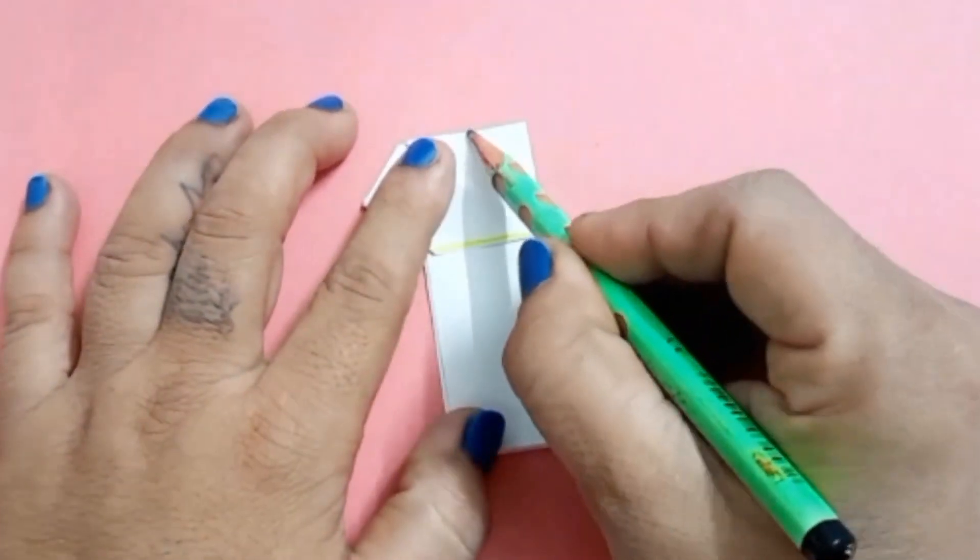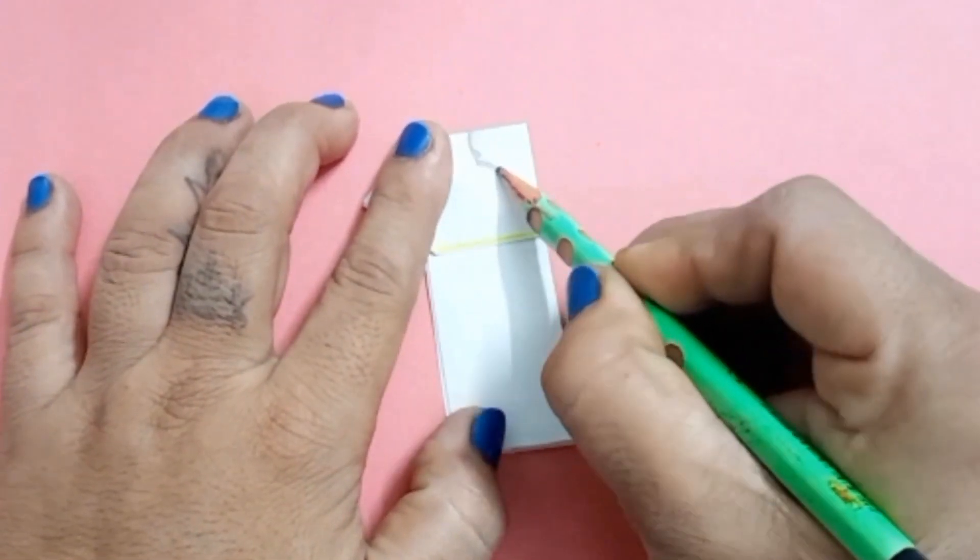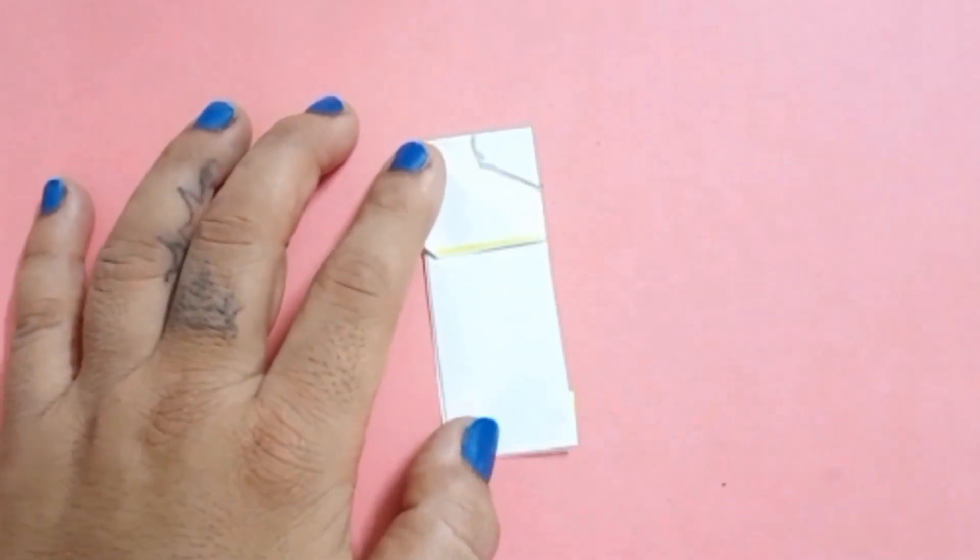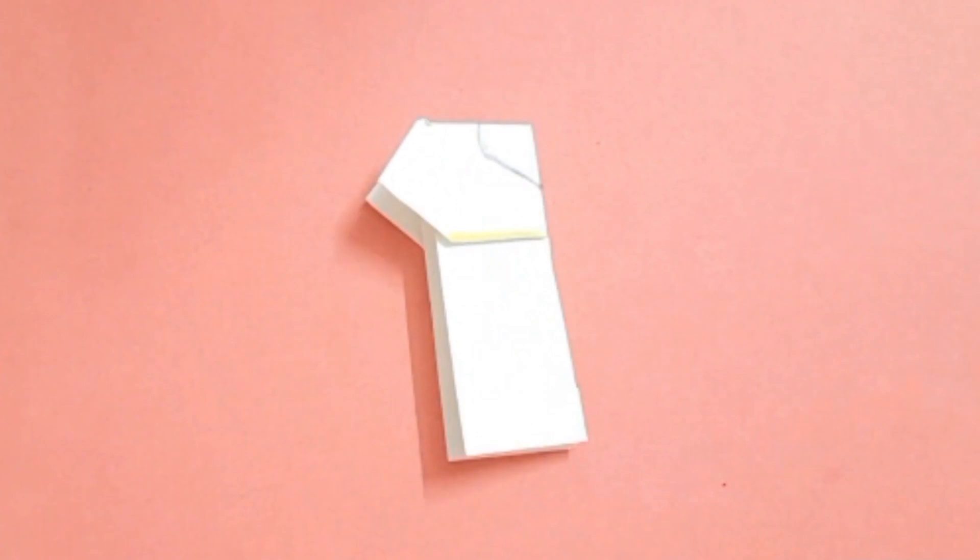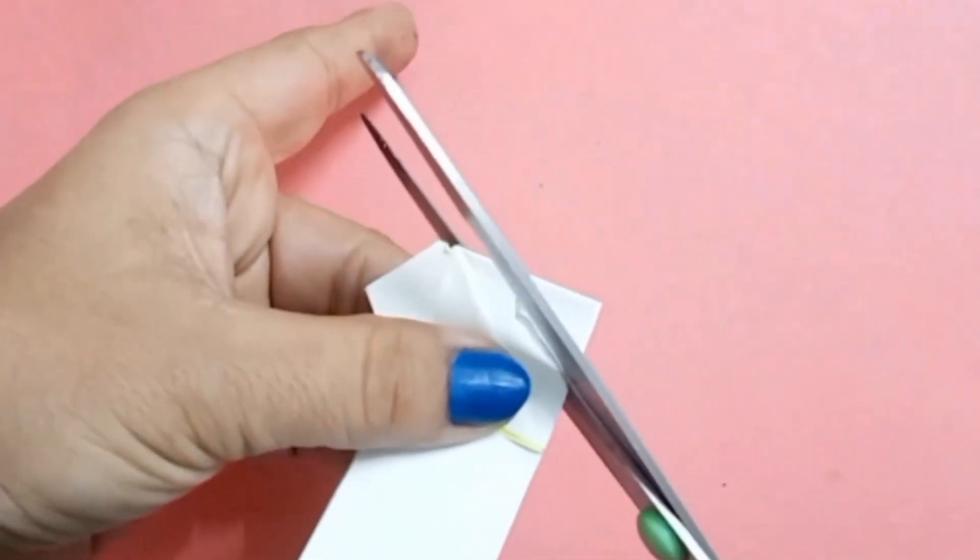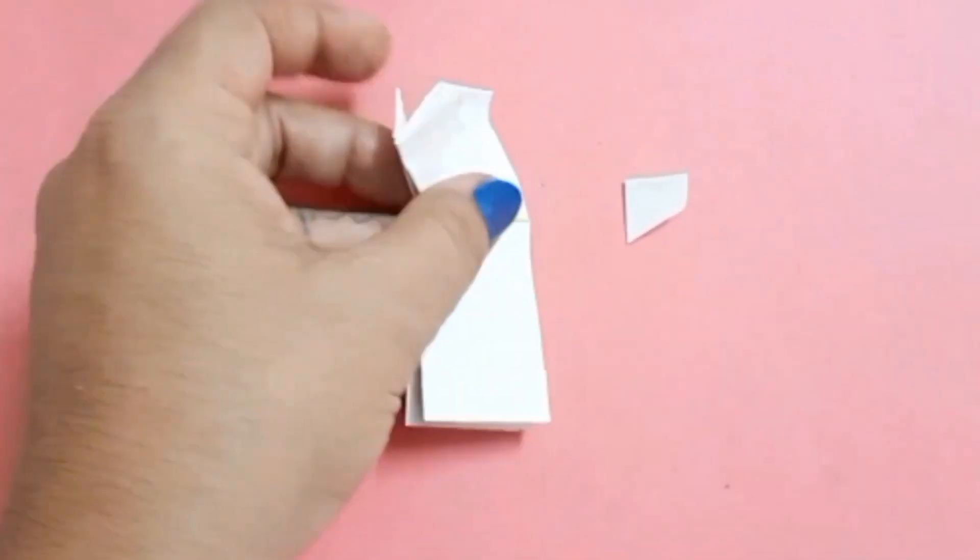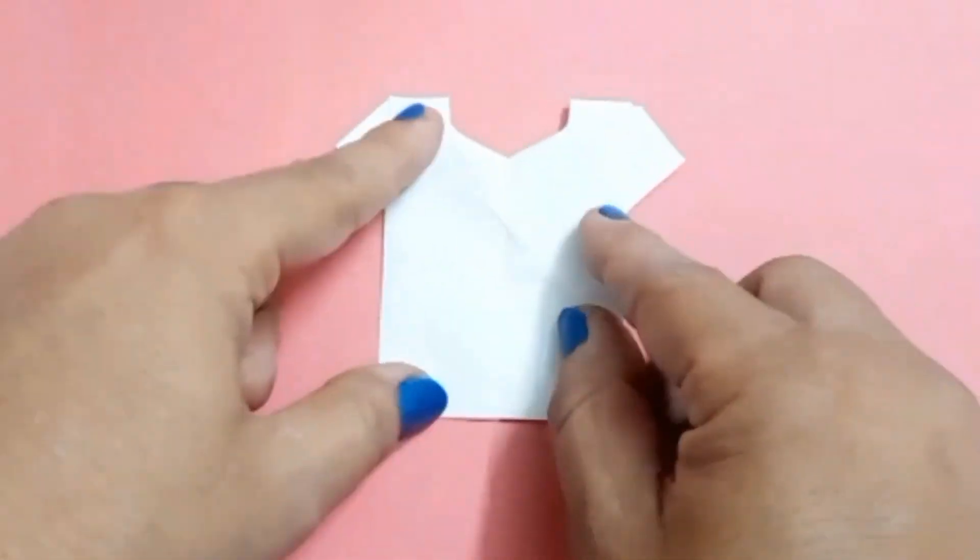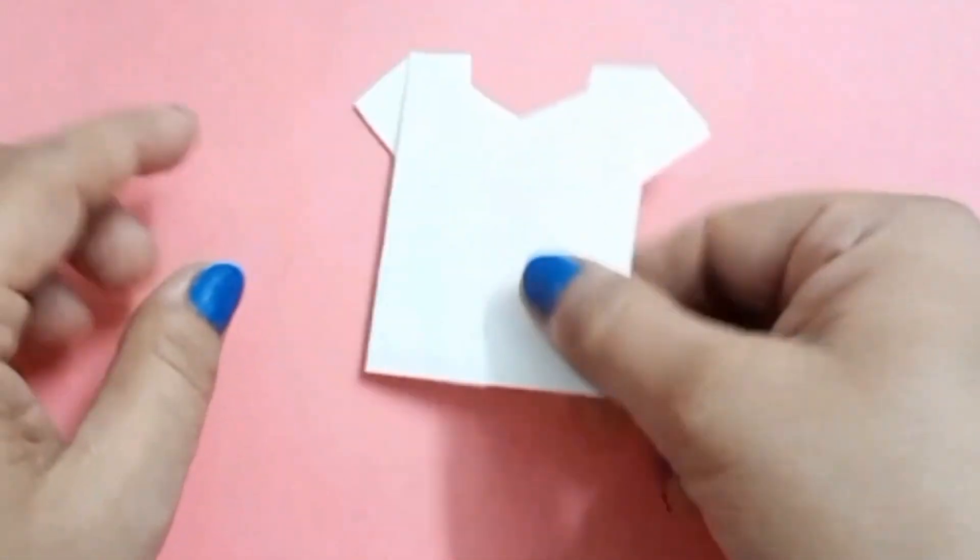Now take a pencil and make a shape of neck and cut it with scissor. Fold it like this. Open it. Your top is ready.